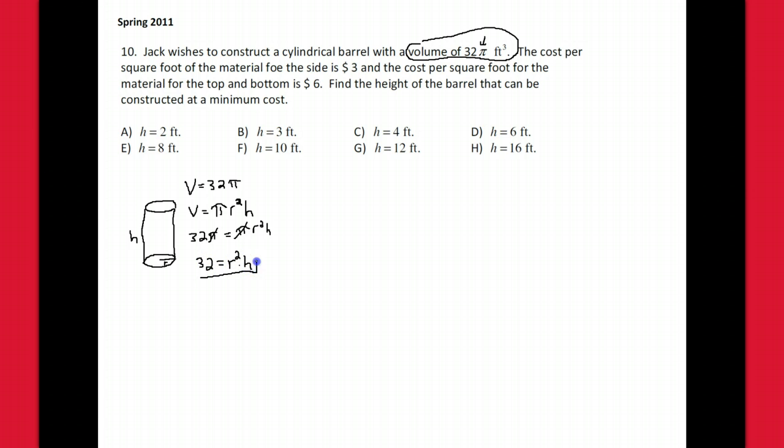What are we trying to maximize or minimize? Find the height of the barrel that can be constructed at a minimum cost. So we need a cost equation—want to minimize cost.